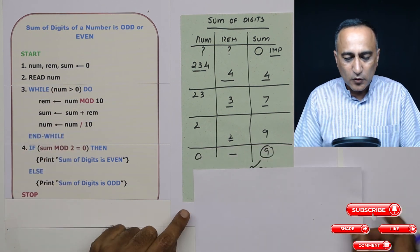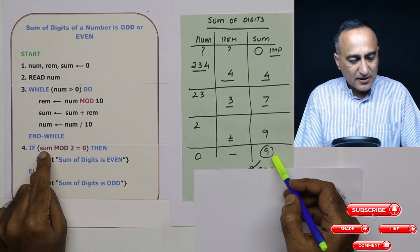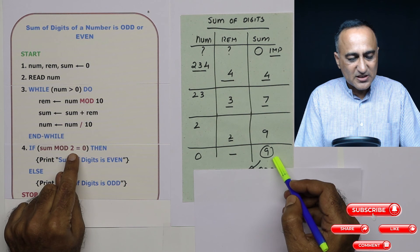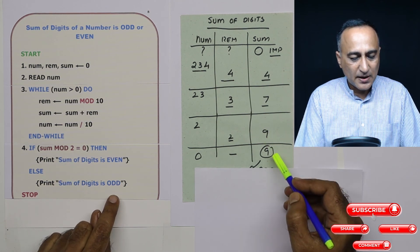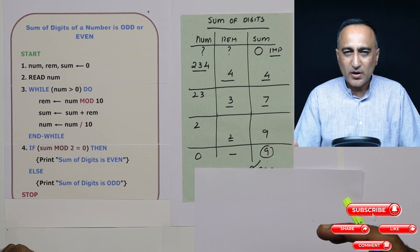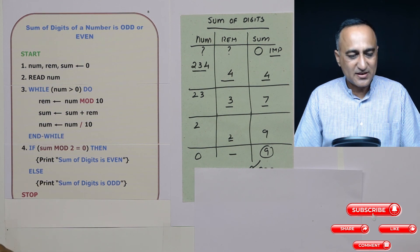In step number four, I am taking nine. Sum stores the value nine. Nine mod two, the remainder is one. Therefore, the sum of digits of this input number happens to be odd. You can take any other number, run through the logic, and you will get perfectly fine results.